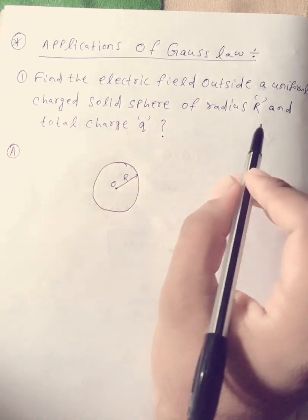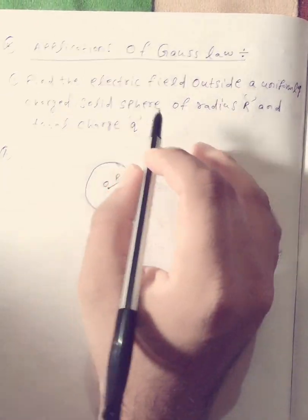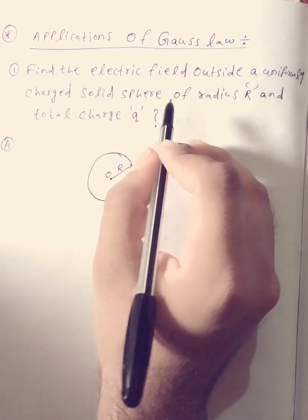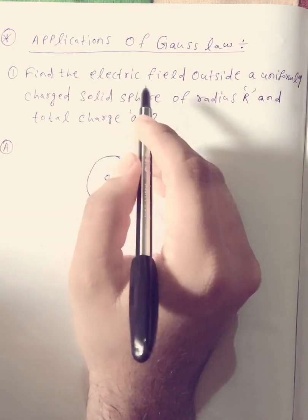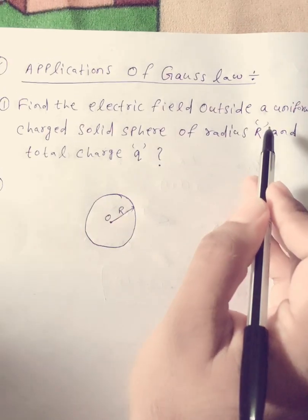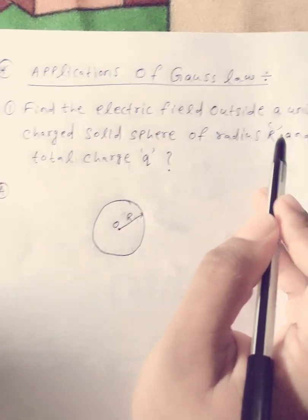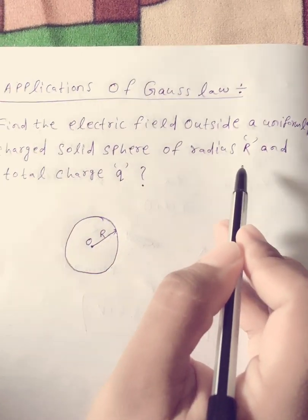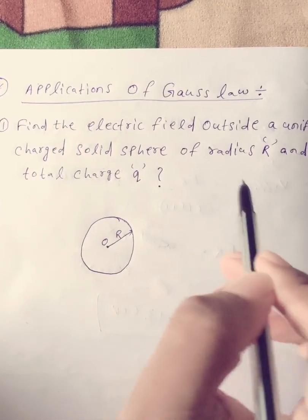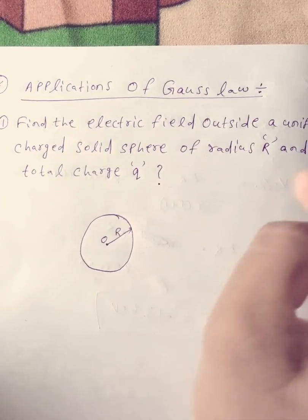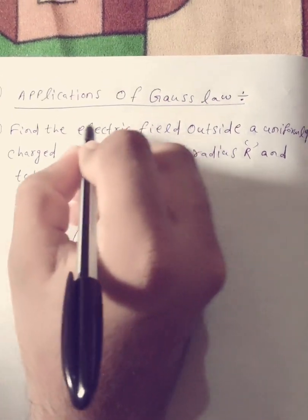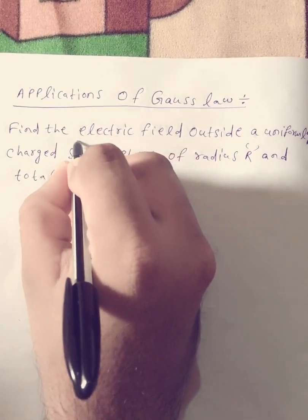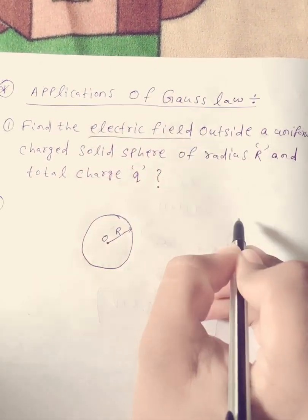This is the first application of Gauss's Law. The question is: find the electric field outside a uniformly charged solid sphere of radius R and total charge Q. The intention of Gauss's Law is to find out the electric field.